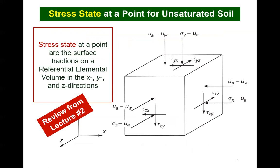Our goal as soil mechanics practitioners is to be able to describe the physical behavior of soils in terms of state variables. The stress state variables at a point can be viewed as surface tractions on a referential elemental volume, or an REV, with X, Y, and Z Cartesian coordinates. The goal in this lecture is to link the stress state variables with the deformation state variables for an unsaturated soil. In so doing, it becomes possible to map changes in the relative amount of each phase of an REV. It is also important that there be a smooth transition between descriptions of physical behavior for a saturated soil and an unsaturated soil.